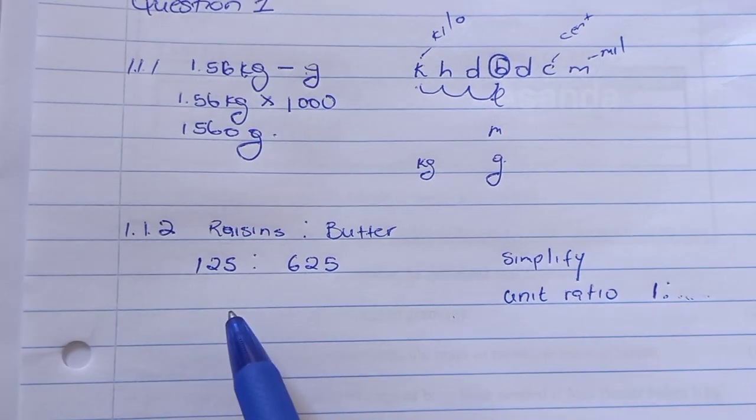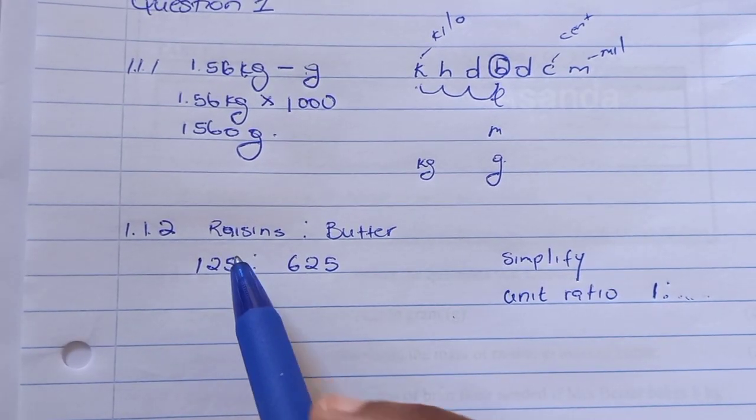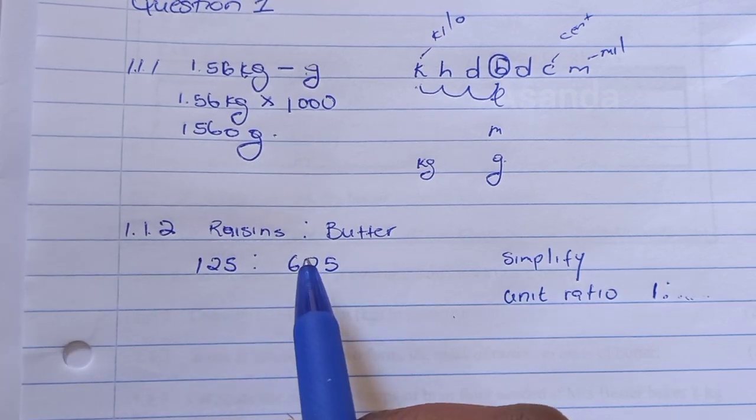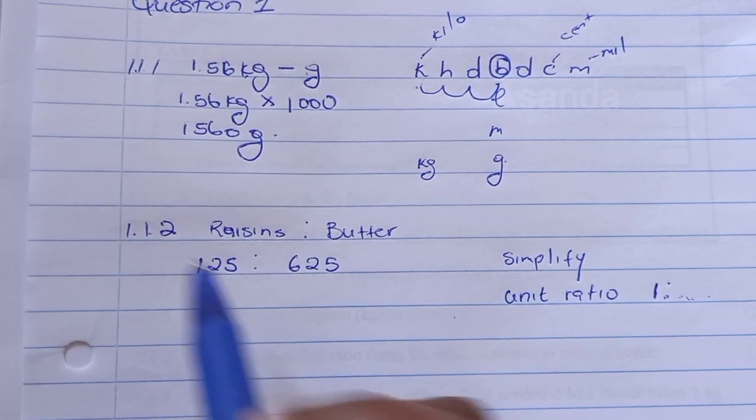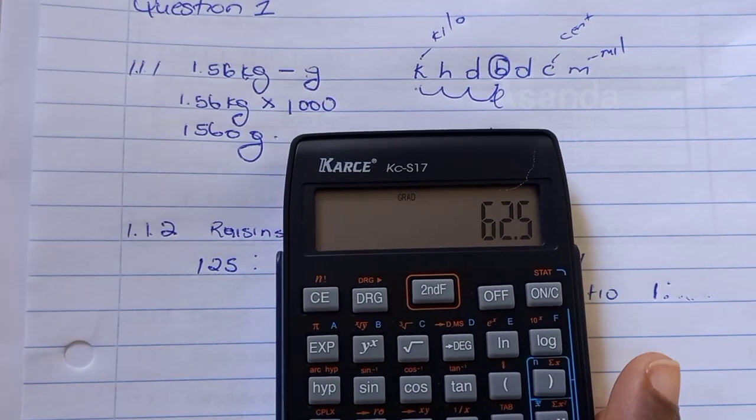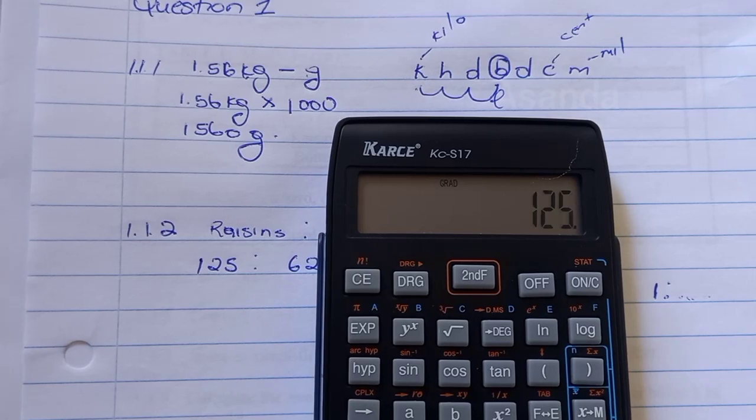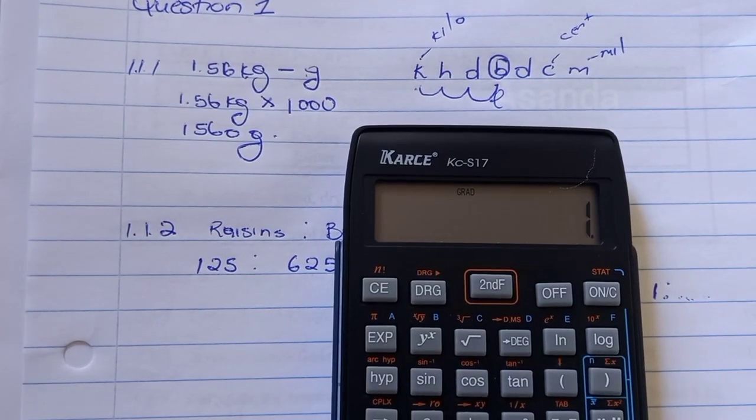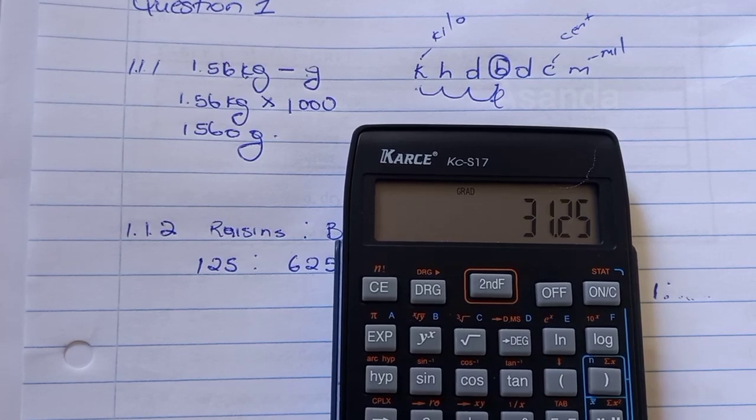Looking at this, what I always do is I always start with one. If I divide this by one, the numbers won't change. So I try two. 125 divided by two gives me a comma. I try three, gives me a comma. Let me try four, gives me a comma again. 125 divided by five gives me 25.